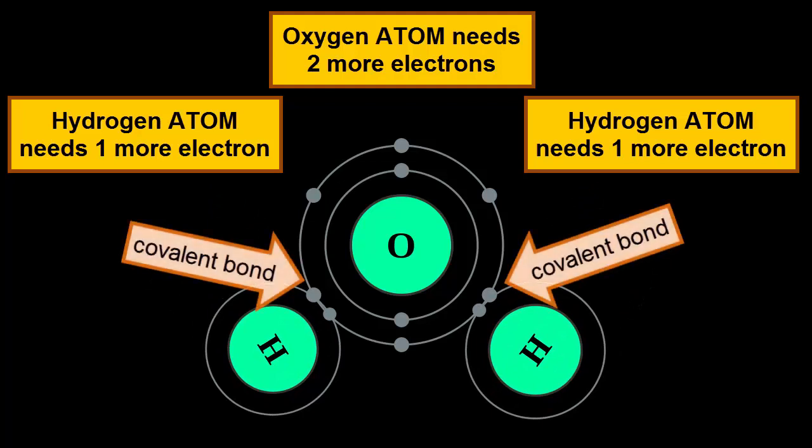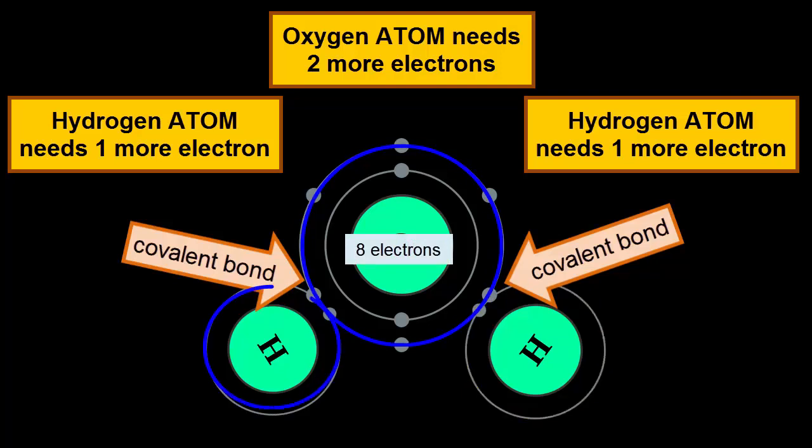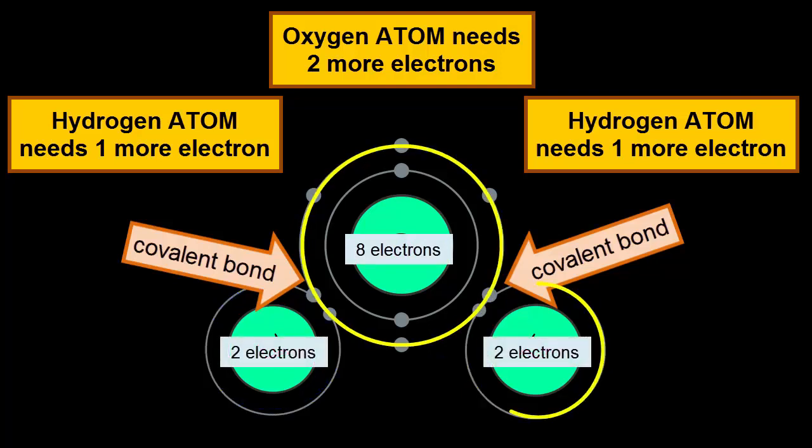Each shares one of its electrons with the other, creating a covalent bond for a total of two covalent bonds in one water molecule. Those shared electrons orbit both nuclei and act as a glue holding the atoms tightly together. The result? There are eight total electrons orbiting the oxygen in its outer shell, and two electrons orbiting each hydrogen in its outer shell. All atoms have filled outermost shells, and the molecule is chemically stable.